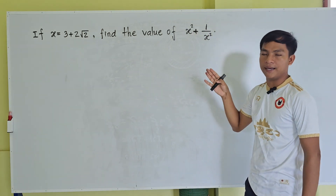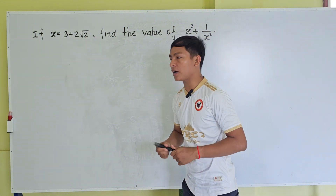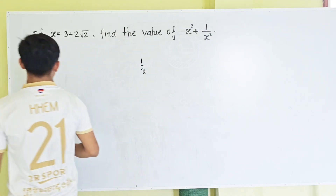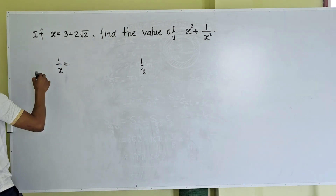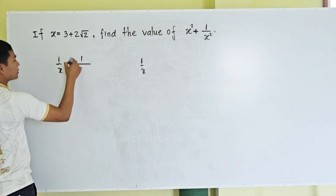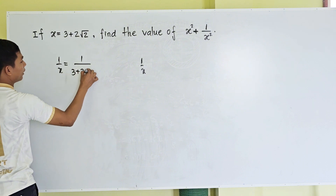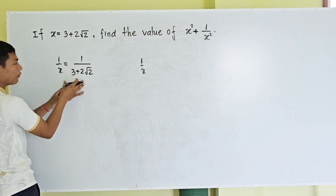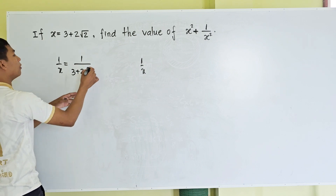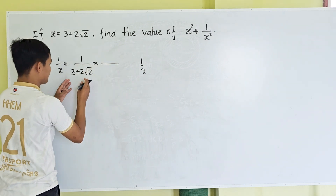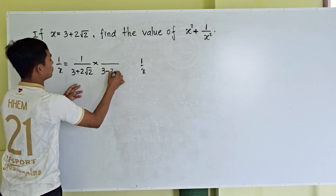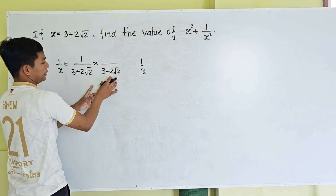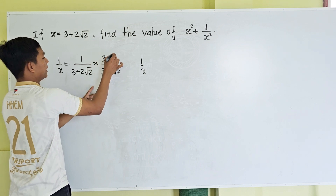First, I find the value of 1 divided by x. So 1 divided by x is equal to 1 divided by 3 plus 2 square root 2. Now I want to simplify the square root in the denominator, so I multiply by 3 minus 2 square root 2 on both the numerator and denominator.